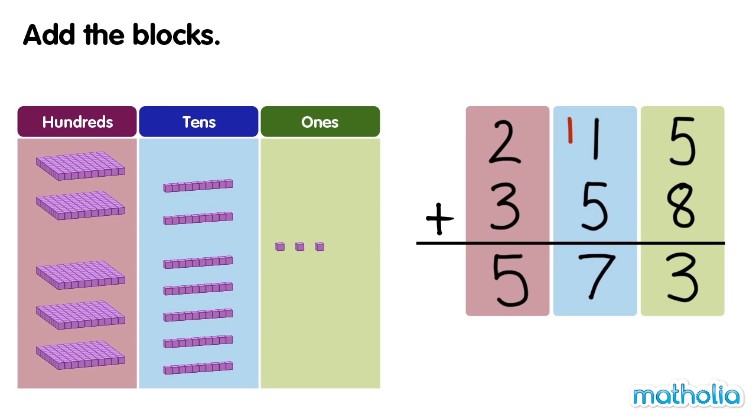There are 573 blocks. 215 plus 358 equals 573.